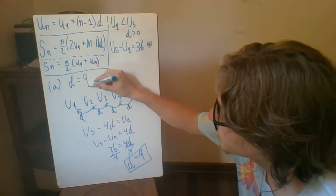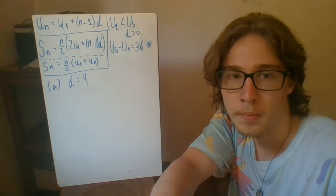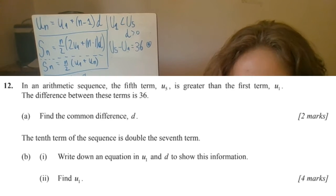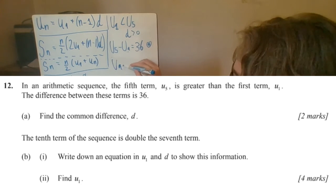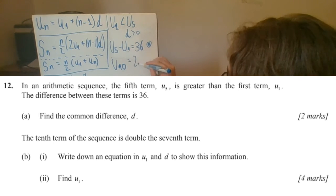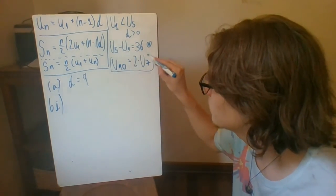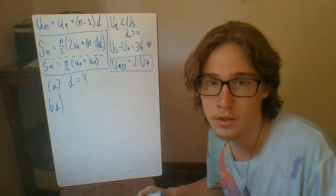So d equals 9. So part b, part 1. First of all, they tell us that the 10th term of the sequence is double the 7th term. And they ask us to write down this information using only u1 and d.